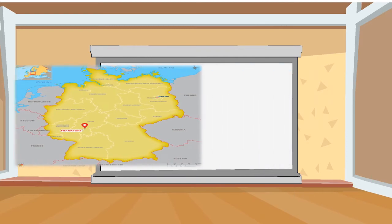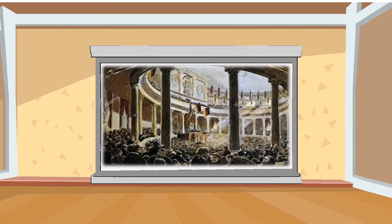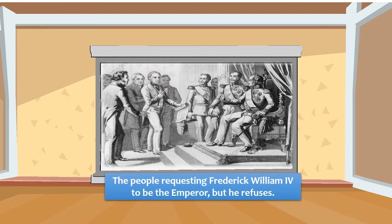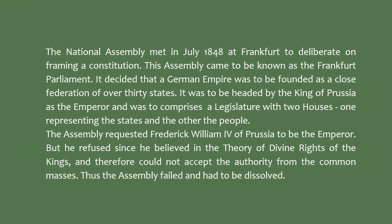The national assembly met in July 1848 at Frankfurt to deliberate on framing a constitution — this assembly came to be known as the Frankfurt Parliament. It decided that a German empire was to be founded as a close federation of over 30 states, headed by the King of Prussia as emperor, comprising a legislature with two houses: one representing the states and the other the people. The assembly requested Frederick William of Prussia to be the emperor, but he refused since he believed in the divine right of kings and could not accept authority from the common masses. Thus the assembly failed and had to be dissolved.